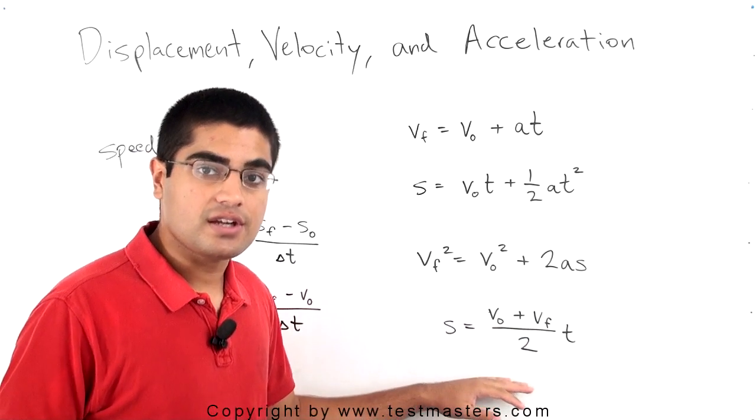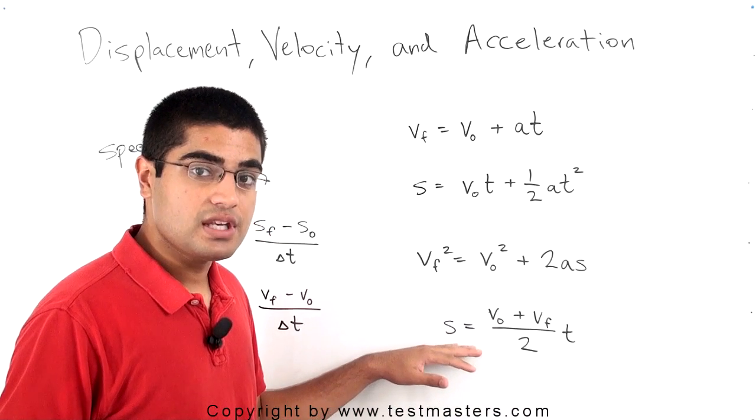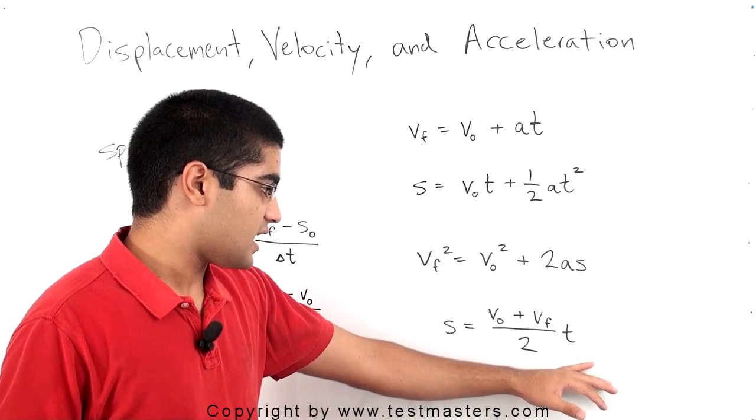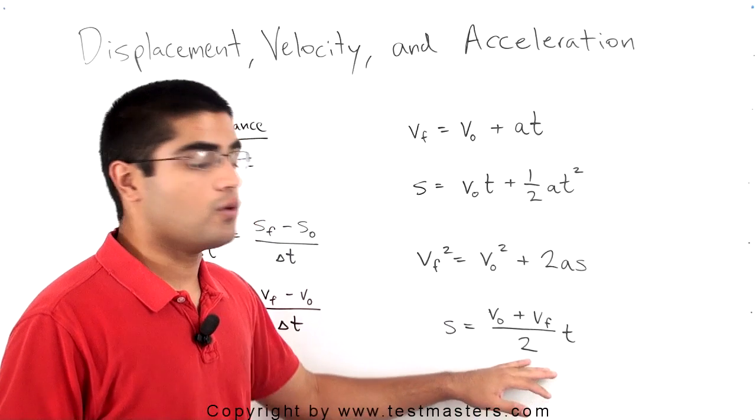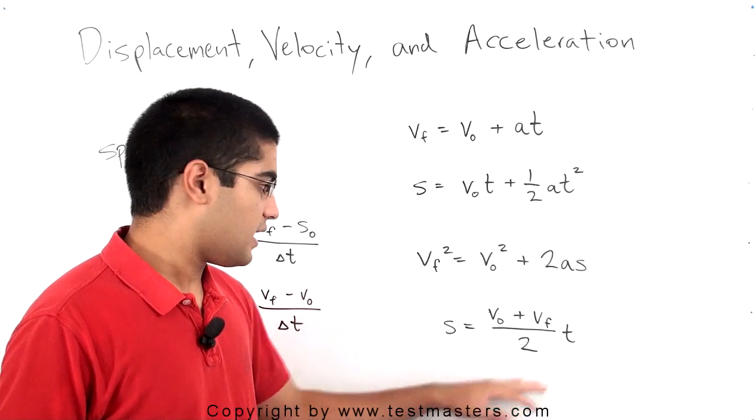The final expression here simply states that the displacement is equal to the average velocity times time. The average velocity, of course, is just the initial velocity plus the final velocity divided by 2.